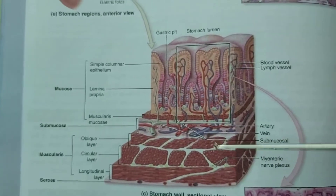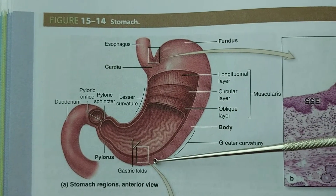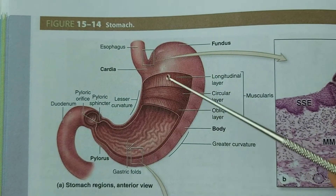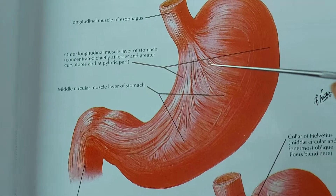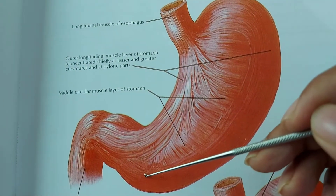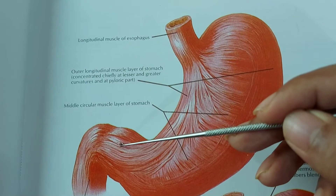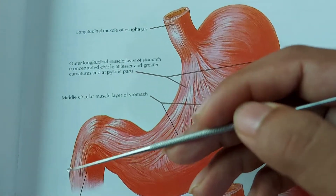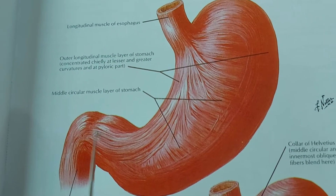Now we can see the stomach in situ. On the outside there is the serous layer, then the muscle layer. Here we see the longitudinal muscle along the long axis of the stomach, the circular muscle, and the oblique muscle. The longitudinal muscles run along the lesser curvature and the greater curvature. The contraction of this longitudinal muscle causes propulsion of food from the stomach into the duodenum. The longitudinal muscle also forms the sphincter of the pylorus.